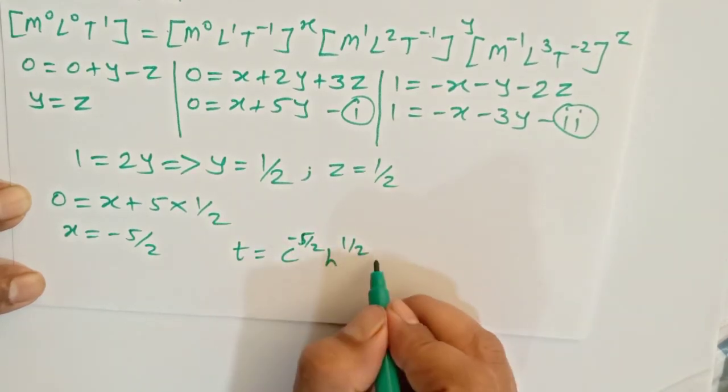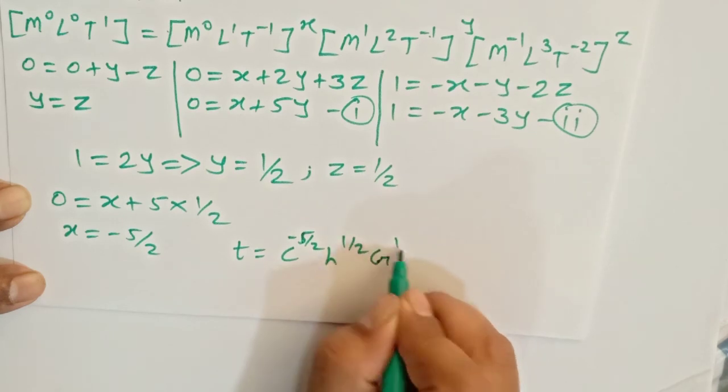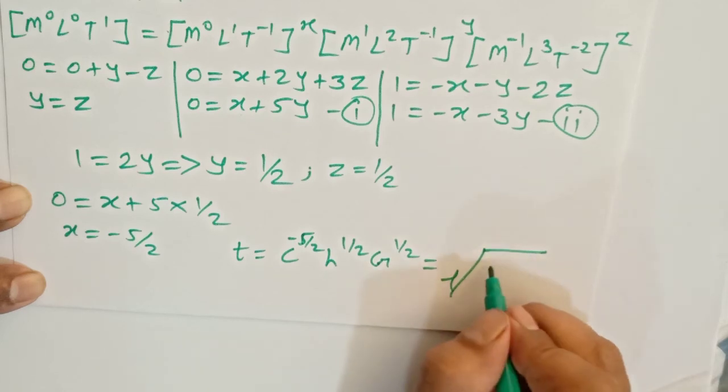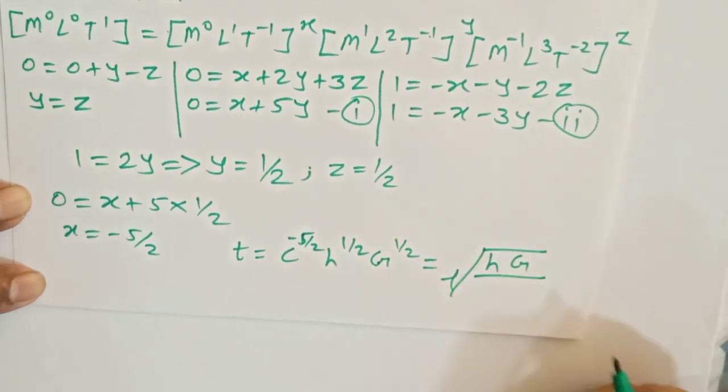And G to the power half. So we can say t is equal to the square root of hG divided by c^5.